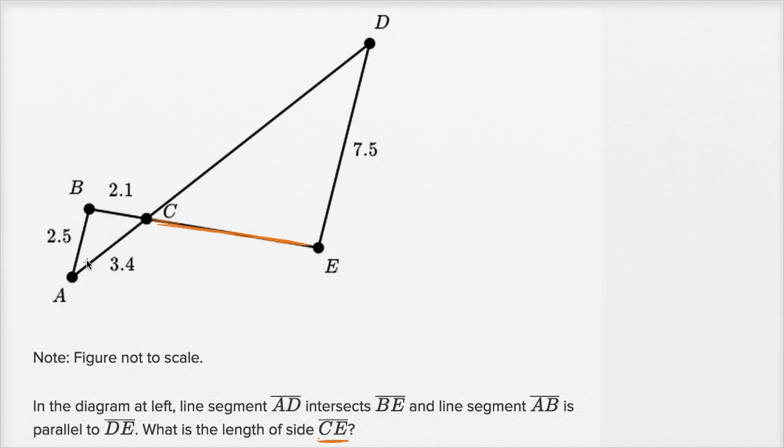Now it might jump out at you, at least it looks like it, immediately that the small triangle on the left is going to be similar to this larger triangle on the right. But let's feel good about that, let's prove that to ourselves. And to help ourselves prove that, we're going to remind ourselves that AB is parallel to DE.